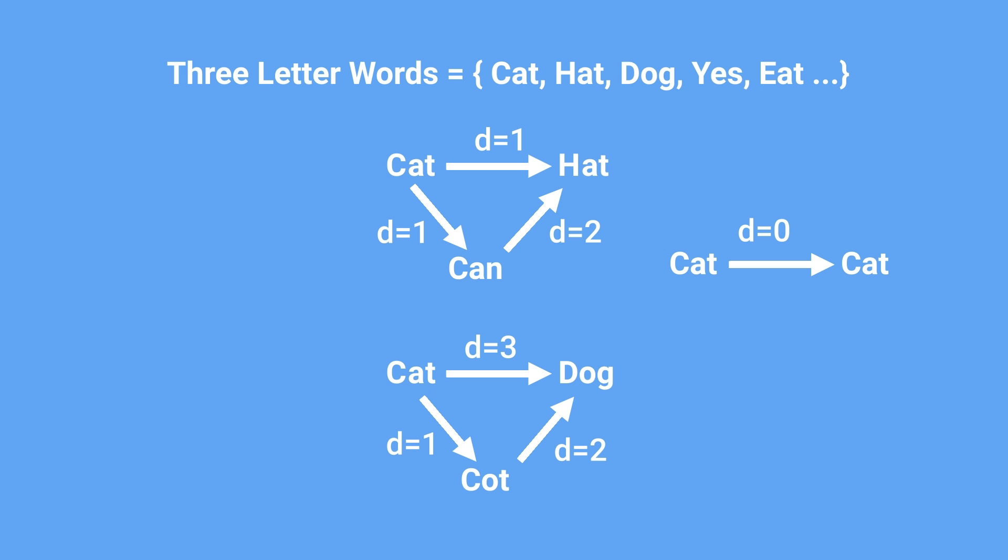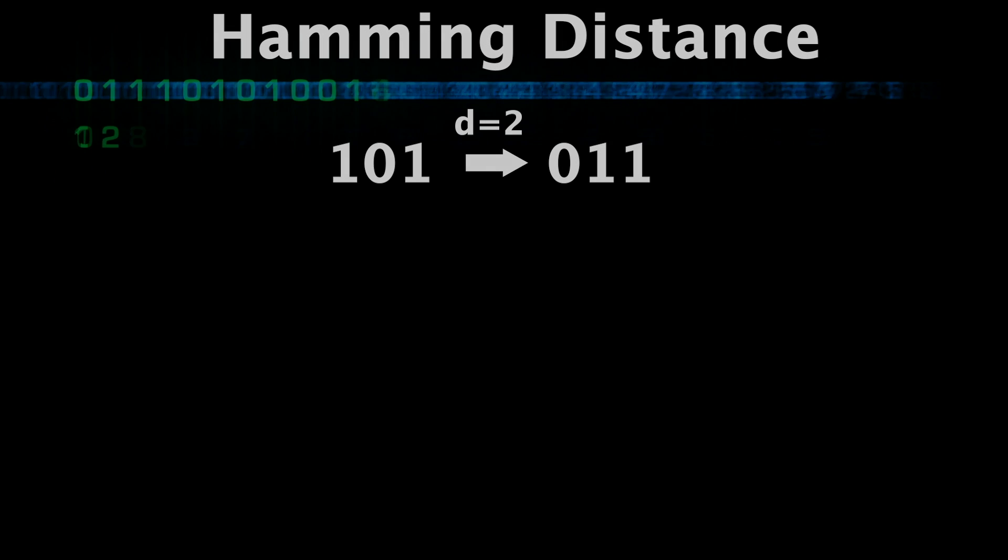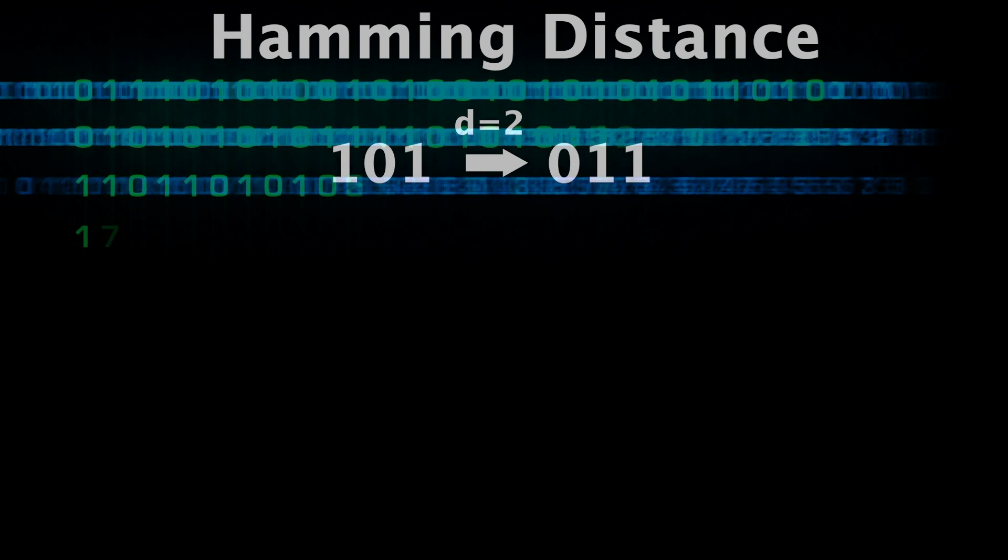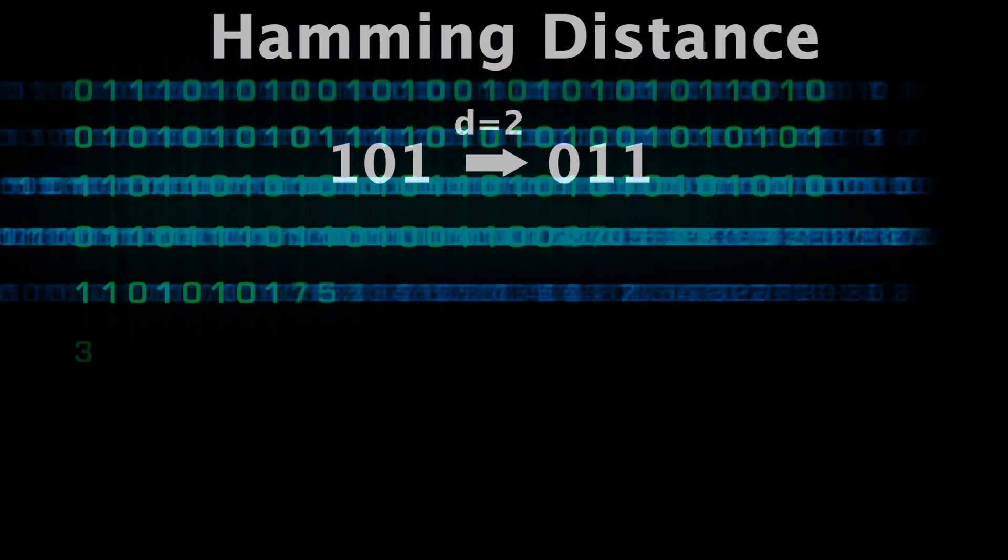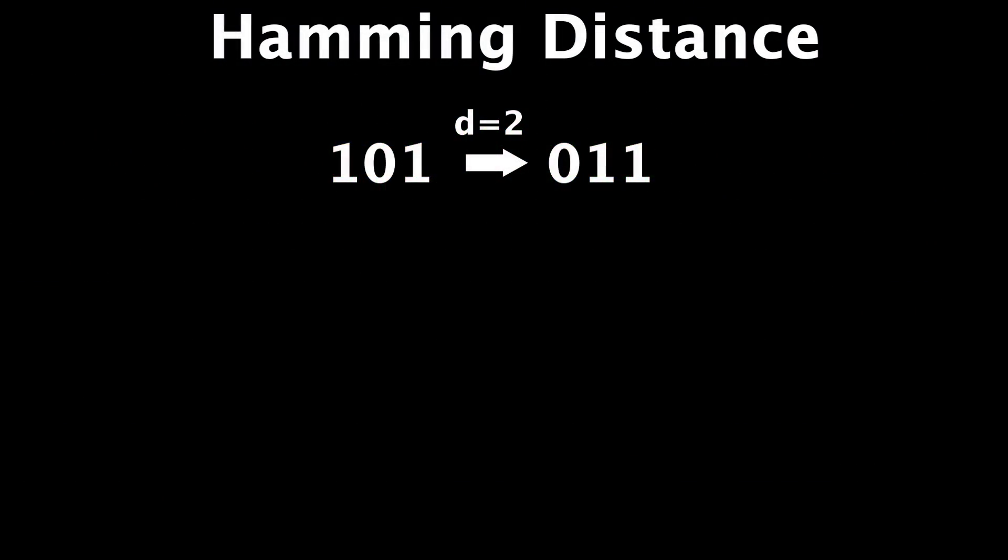Now, flipping around 3 letter words may not seem applicable, but when you change these to binary strings, then it is. When you define distance just like we did, the number of bits that need to be flipped for the strings to match, then we have what is called the Hamming distance. This is used in information theory and error detection, as it tells you how different two binary strings are, or how many errors need to be corrected for one string to match another.